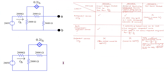The next step is to find the Thevenin resistance. The given circuit has both independent and dependent sources. Thus, we can use method one — the circuit analysis method — or we can use a combination of methods two and three, which involves first deactivating the independent sources and then applying a test source to find R_th. In this example, let us use method one to find R_th.